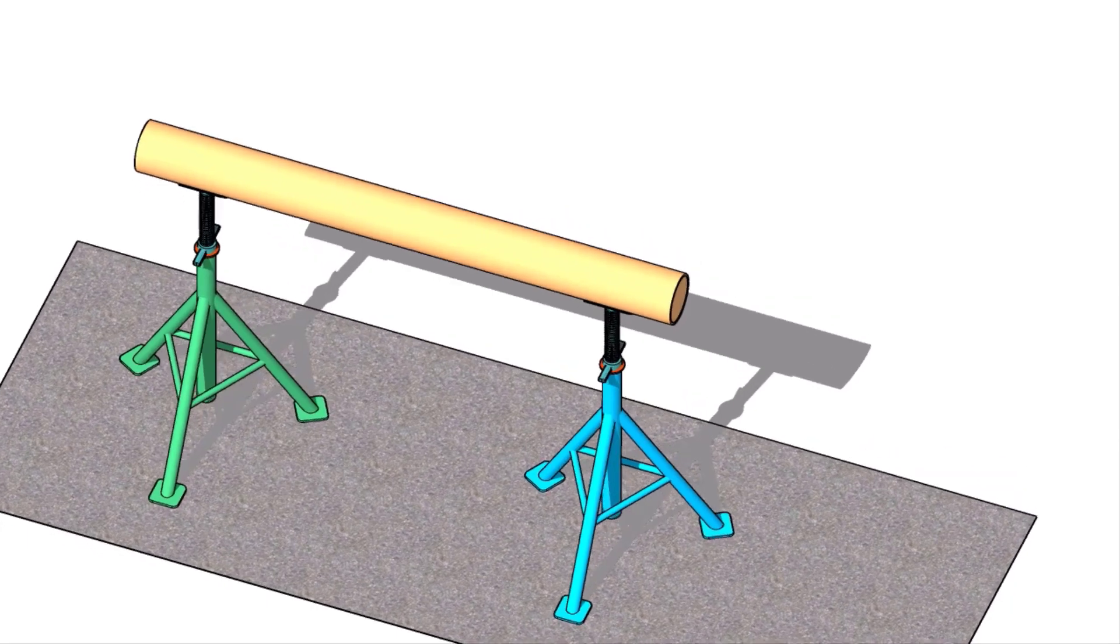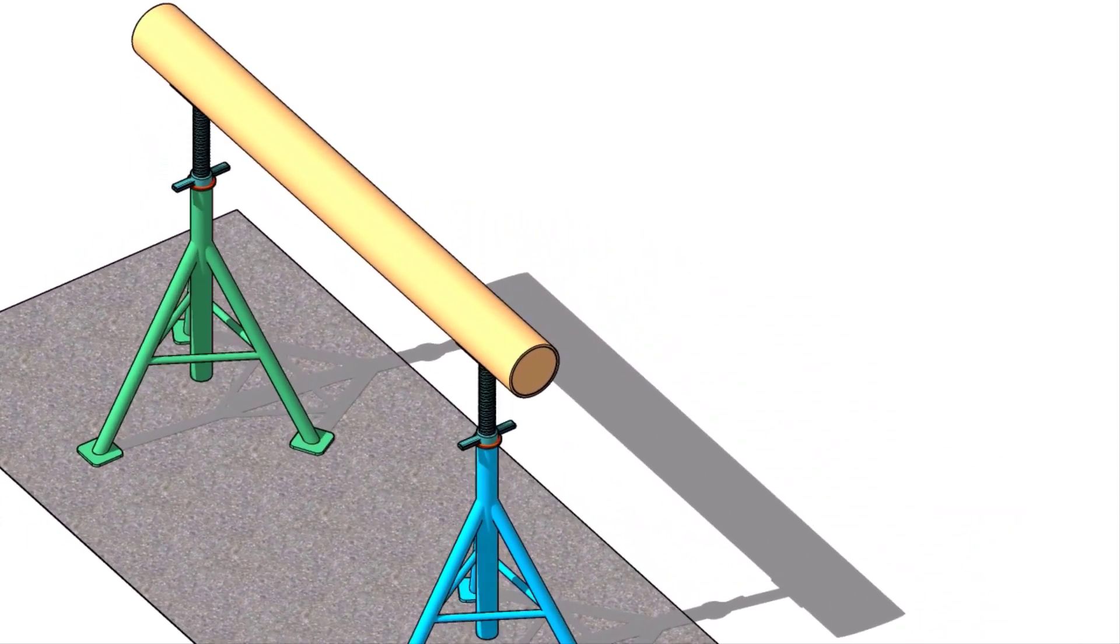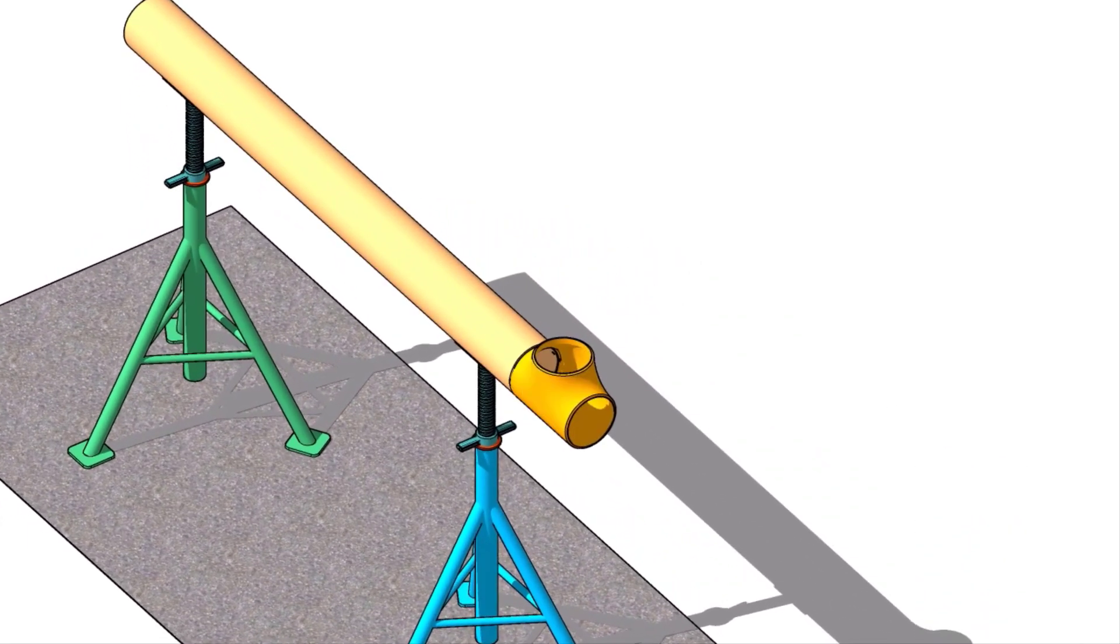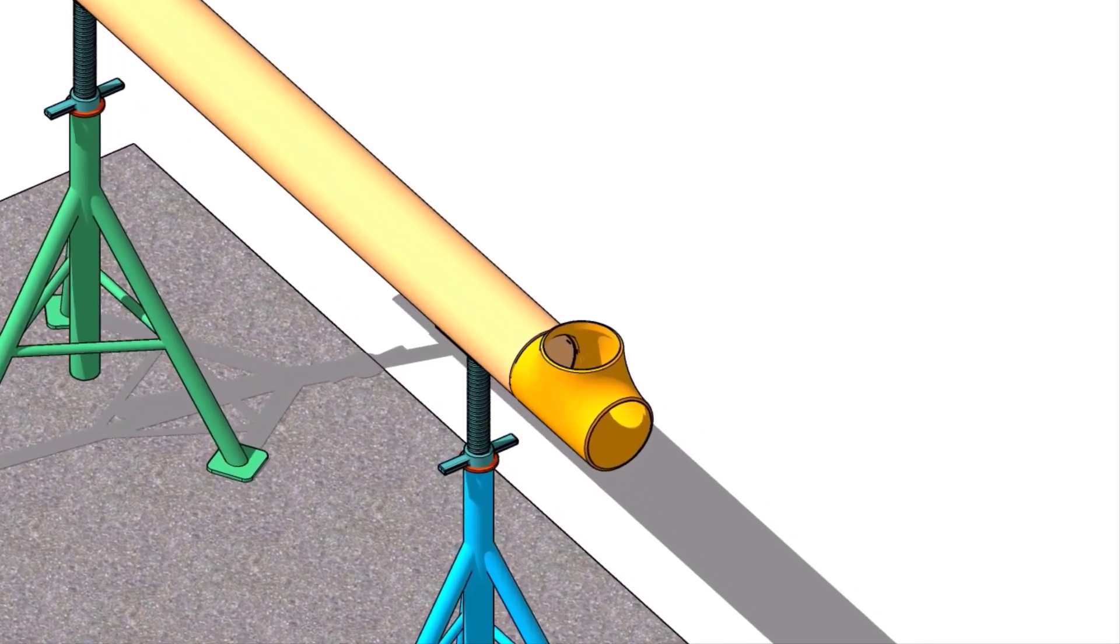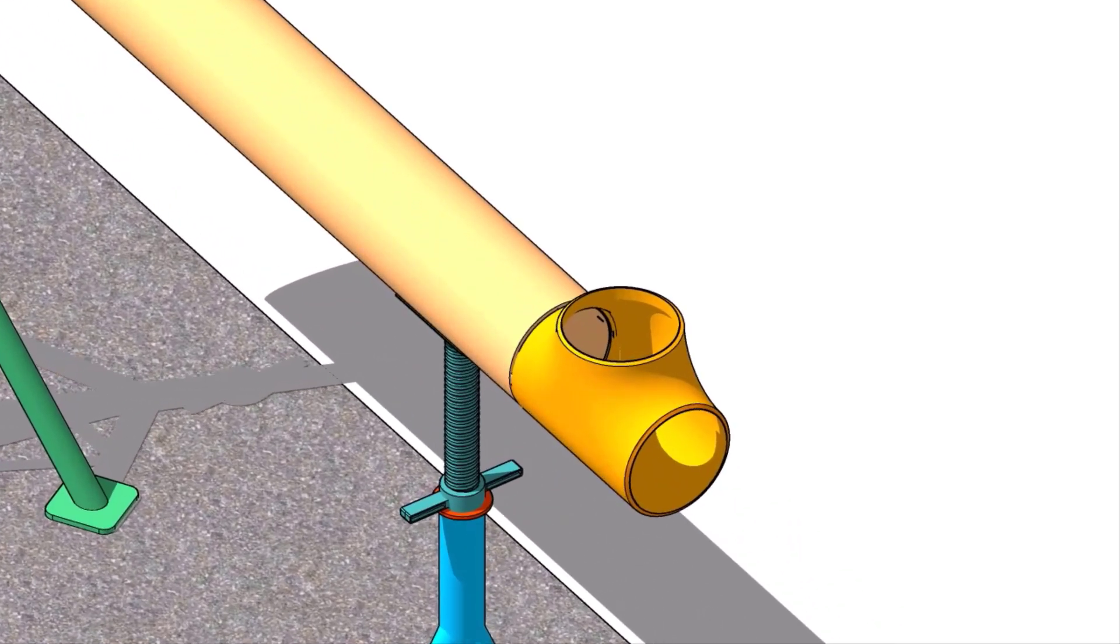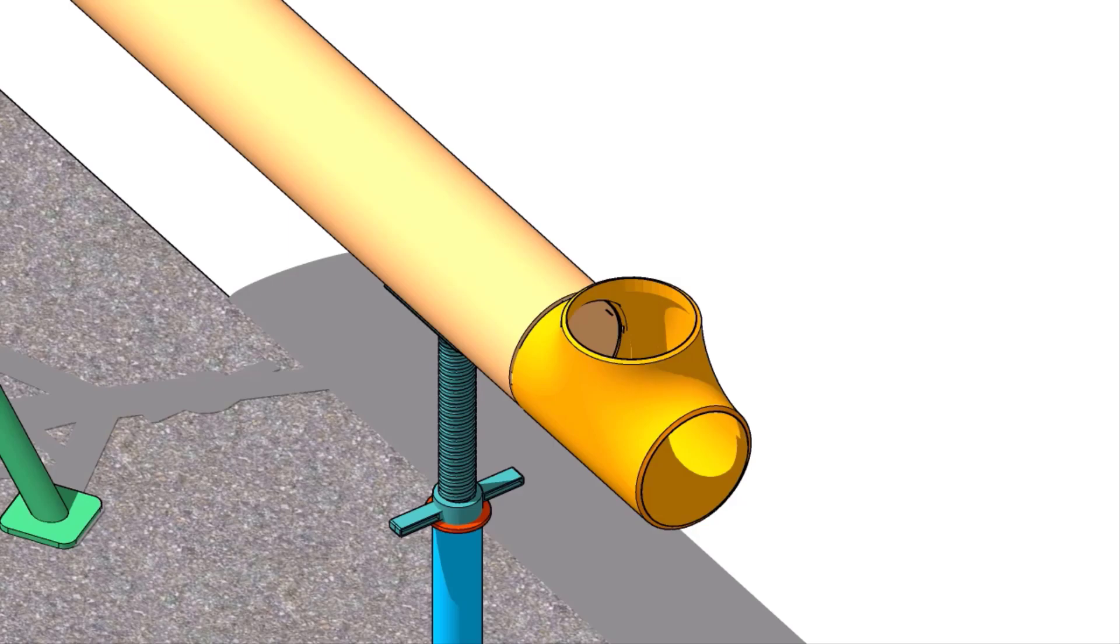Tack weld the tee to a piece of pipe, don't worry about the gap or anything. Now, maintain the top level of the tee from both sides.